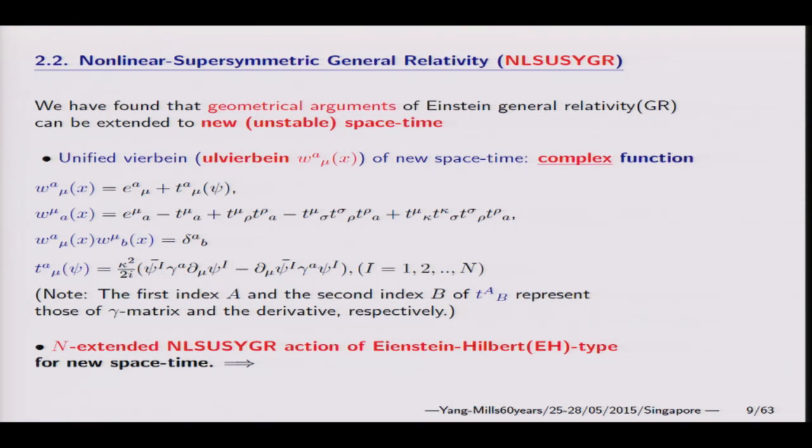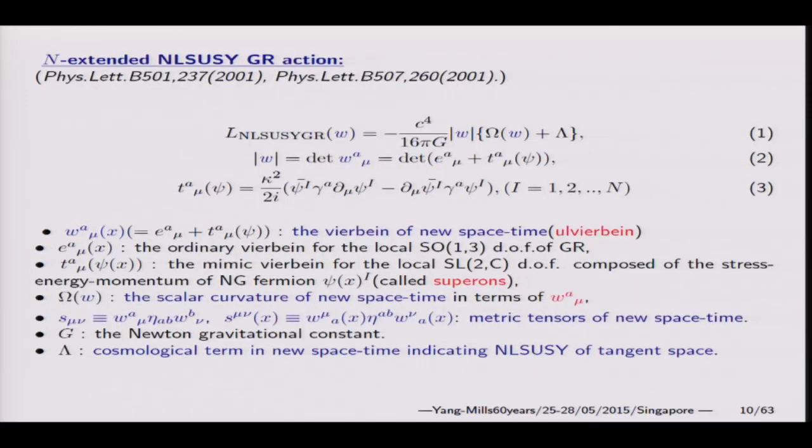This is the picture of our basic assumption. This is an ordinary curved space. The tangent space is specified by Minkowski and grassmann. I find that unified vierbein is given like this: W^A is the superposition of Einstein vierbein plus T_μ. T_μ is the mimic vierbein coming from the non-linear representation. This is the fundamental action in my cell.